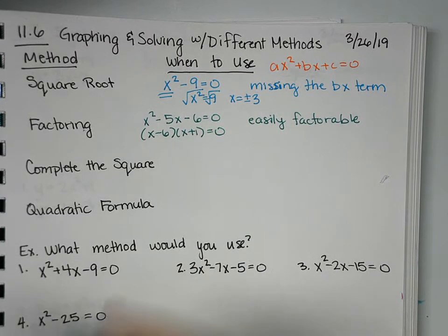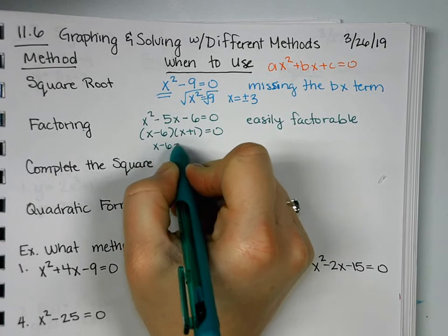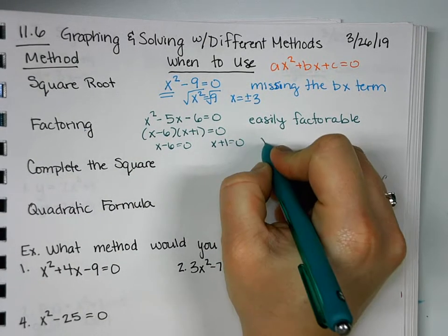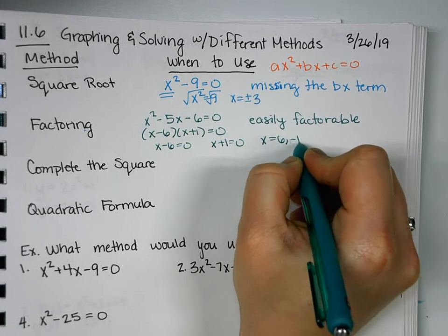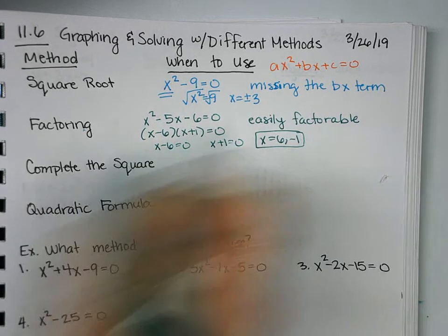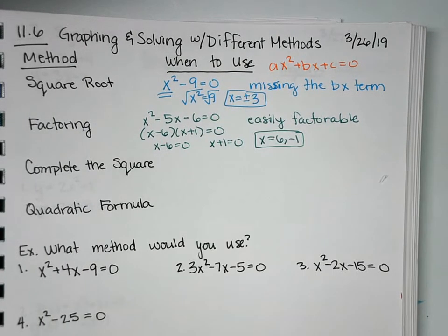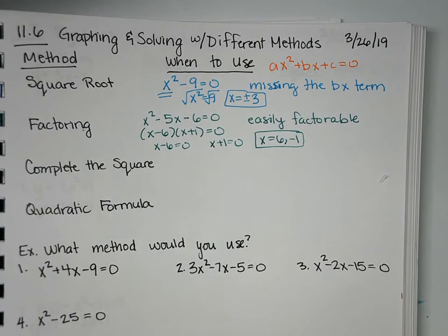If we did x minus 6, x plus 1, then we would have our easily factorable. And then to go from there, we take each factor, set it equal to 0, and we get x is equal to 6 and negative 1 as our two solutions. So if it's not something that's obviously factorable to you, or it's going to take more than a couple minutes of thought, then I would move on to a different method.